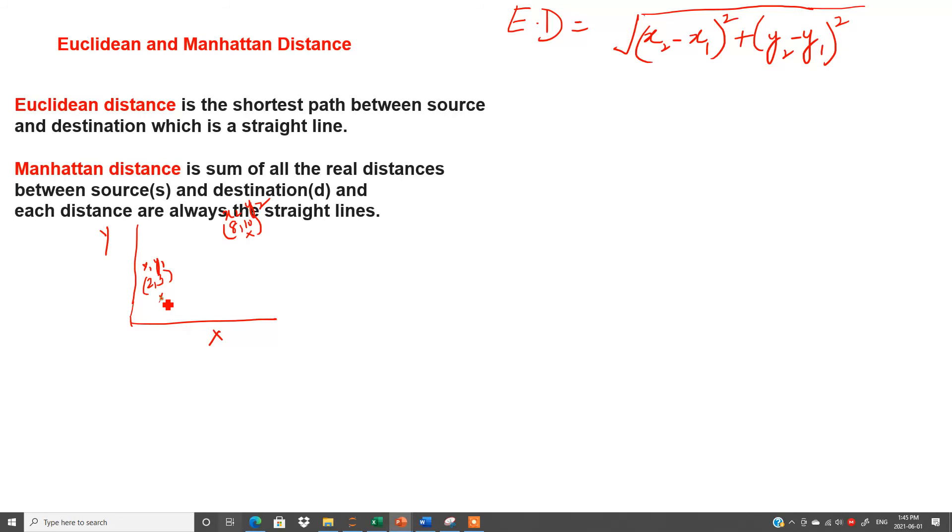So this is my source point, this is my destination point. My goal is that I have to start from here and reach here. I want to find out the distance between these two points and you know that if the distance between two points increases, the similarity decreases, which I will explain this concept in cosine similarity in my next video.